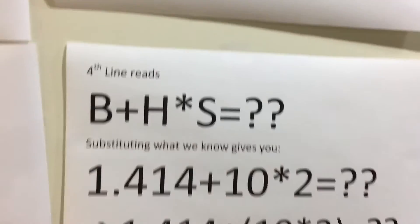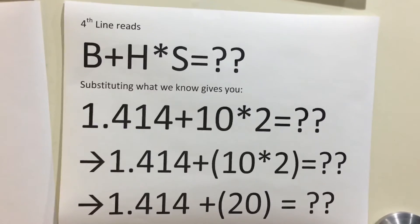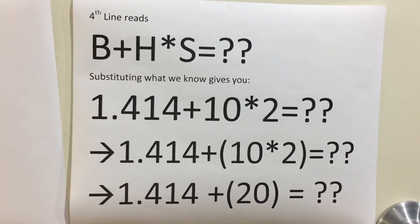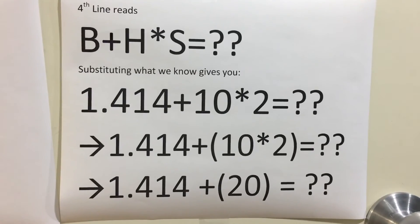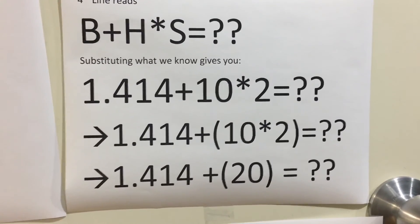You then go to the fourth line. The fourth line reads B plus H times S equals question mark. Substituting what we know gives you 1.414 plus 10 times 2, which goes to 1.414 plus 10 times 2.